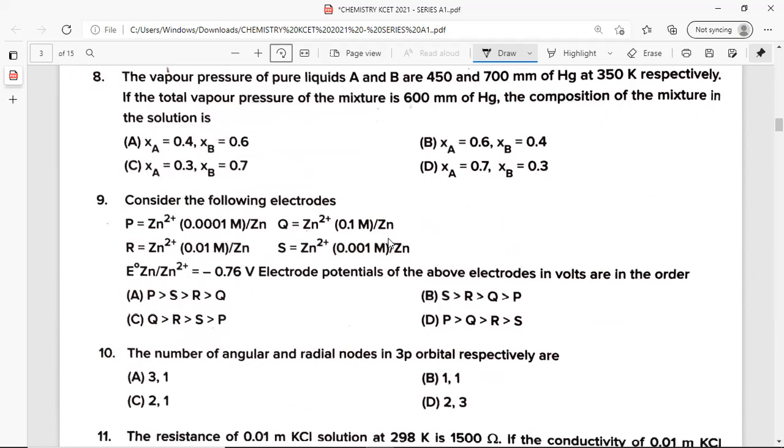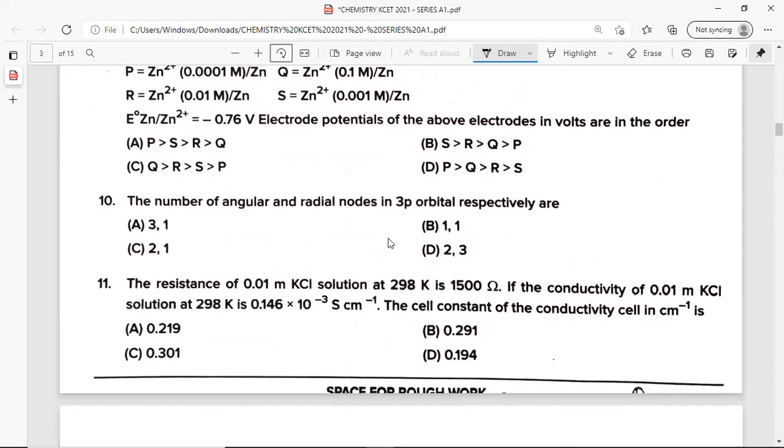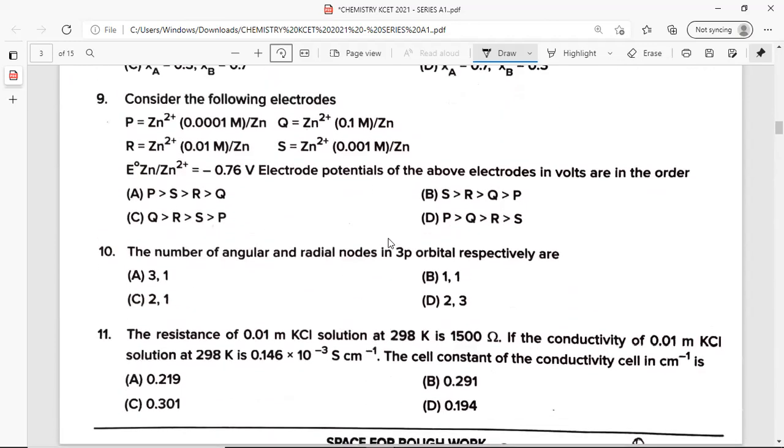Question 8: The vapor pressure of pure liquids A and B are 450 and 700 mm of mercury at 350 Kelvin, respectively. If the total vapor pressure of the mixture is 600 mm of mercury, the composition of the mixture in the solution is option A. Question number 9: Consider the following electrodes. P which is Zn2+ having concentration 0.301 molar bar Zn. Q, Zn2+ having 0.1 molar concentration bar Zn. R, Zn2+ 0.01 molar concentration bar Zn. S, Zn2+ having concentration 0.001 molar bar Zn. E naught value which is given as minus 0.76 volt. The electrode potentials of the above electrodes in volts are in the order, it's option C.